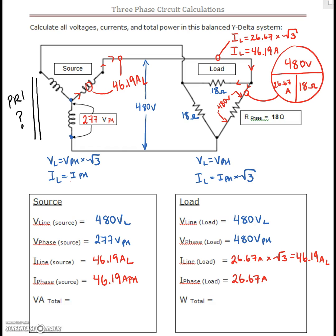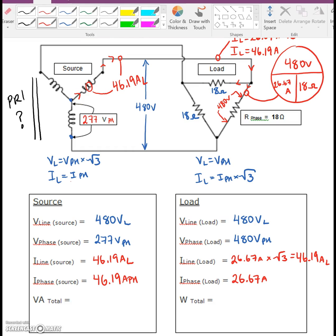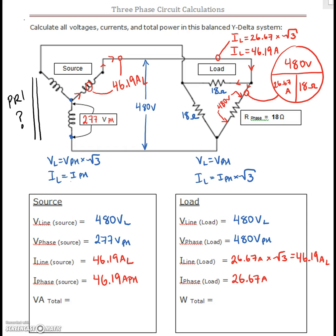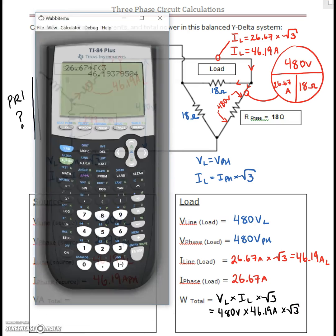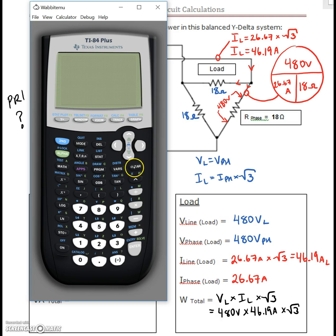Last thing we need to do is find our power values. We have one load being fed by one source here, so these guys will be identical. But we're going to use the two equations to double-check our line and our phase values. We can find our total power by doing V line times I line times root 3. So we've got 480 volts times our line current of 46.19 amps, and we'll multiply that by the square root of 3. That gives us 38,401.64 watts.